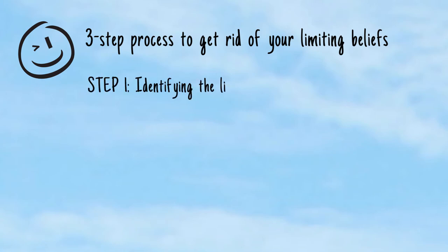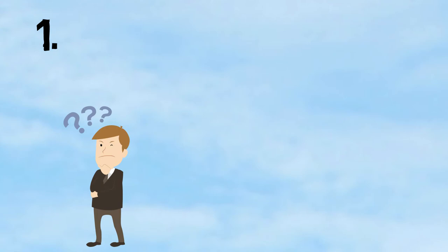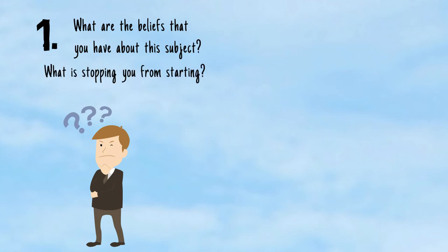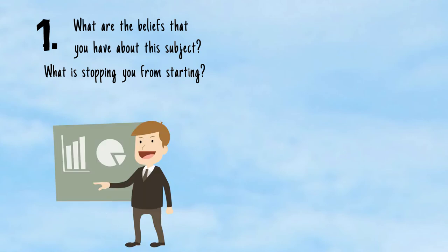Step 1. Identifying the limiting belief. There are two ways to go through this step. The first way is to take your time and think about the things you want to do. Things you wanted to start but you keep procrastinating and ask yourself what are the beliefs that you have about this subject. What is stopping you from starting?